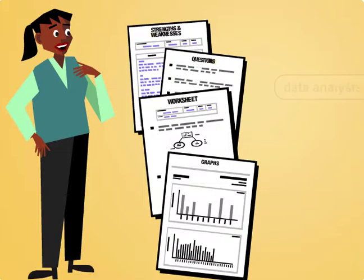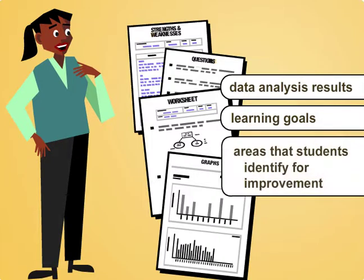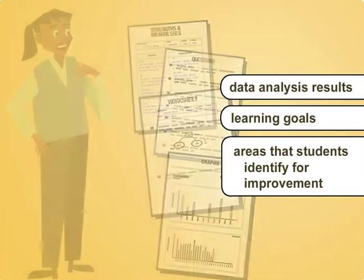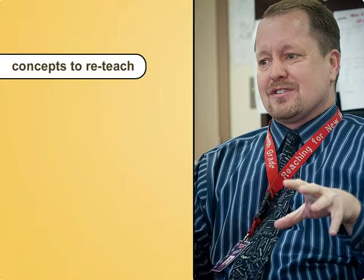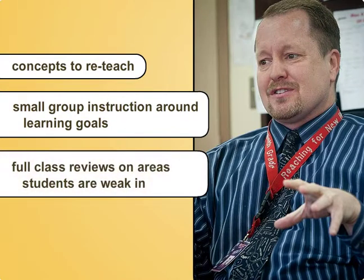Teachers can consider students' data analysis results, learning goals, and any areas that students identify for improvement as they decide how to adjust their instruction. Students' responses in these areas can help teachers identify concepts that need to be re-taught, organize small group instruction around goals the students prioritized for themselves, or provide full class reviews on areas that the most students identify as a weakness.